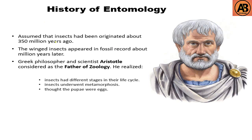Now we're going to learn about the history of entomology. It is assumed that insects had originated about 350 million years ago. Winged insects appeared in the fossil record about 300 million years later. Greek philosopher and scientist Aristotle is considered as the father of zoology. He realized that insects had different stages in their life cycle, that insects underwent metamorphosis, and he thought the pupae were eggs.